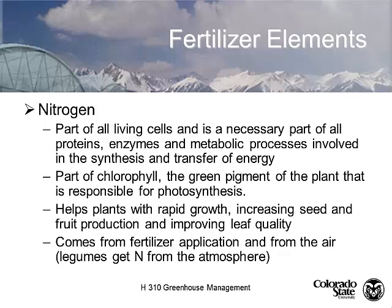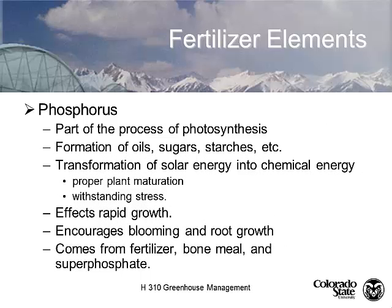Nitrogen is the first of the primary macro elements. It's part of all living cells, proteins, enzymes, and chlorophyll — it helps plants grow. It comes from fertilizer application, or from symbiotic nitrogen fixation by rhizobium bacteria in leguminous plants. Nitrogen is freely available but we often see deficiency showing up as yellowing of foliage, often starting at the growing tips. Next lecture we'll show pictures of specific element deficiencies.